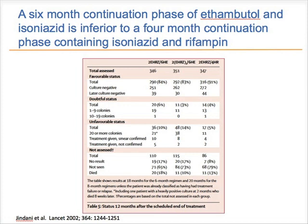In this trial by Amina Jindani and colleagues published in The Lancet in 2002, you can see that the six-month regimen, shown in the right-hand column, is associated with an unfavorable outcome only five percent of the time, as previously mentioned. The eight-month regimens, because they have a less effective continuation phase of ethambutol and isoniazid instead of rifampin, have unfavorable outcomes 10 to 14 percent of the time. So this eight-month regimen is clearly inferior, and the six-month regimen should be preferred as initial therapy all over the world for all patients with drug-susceptible TB.